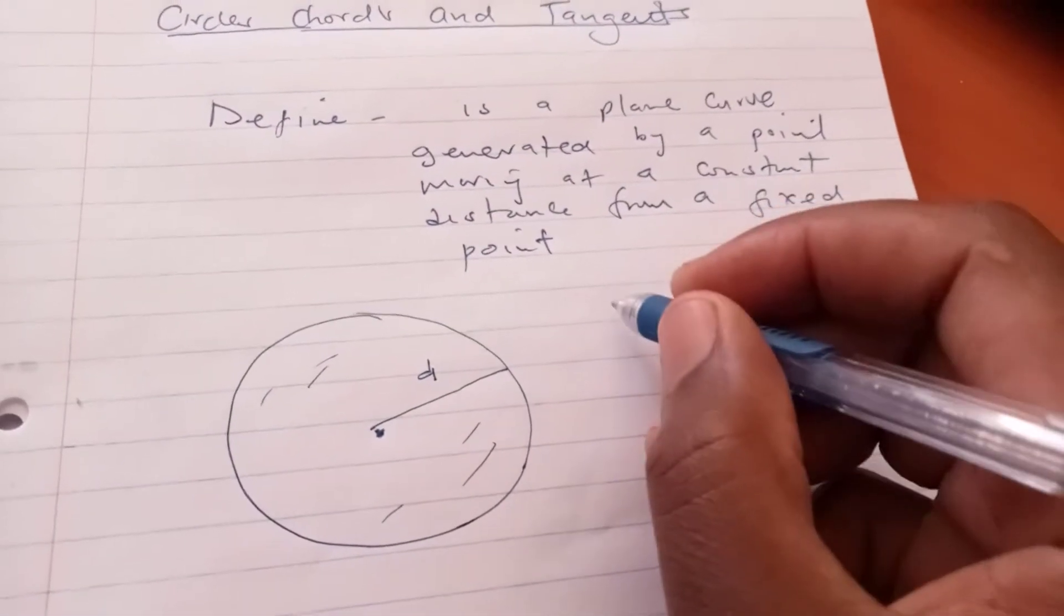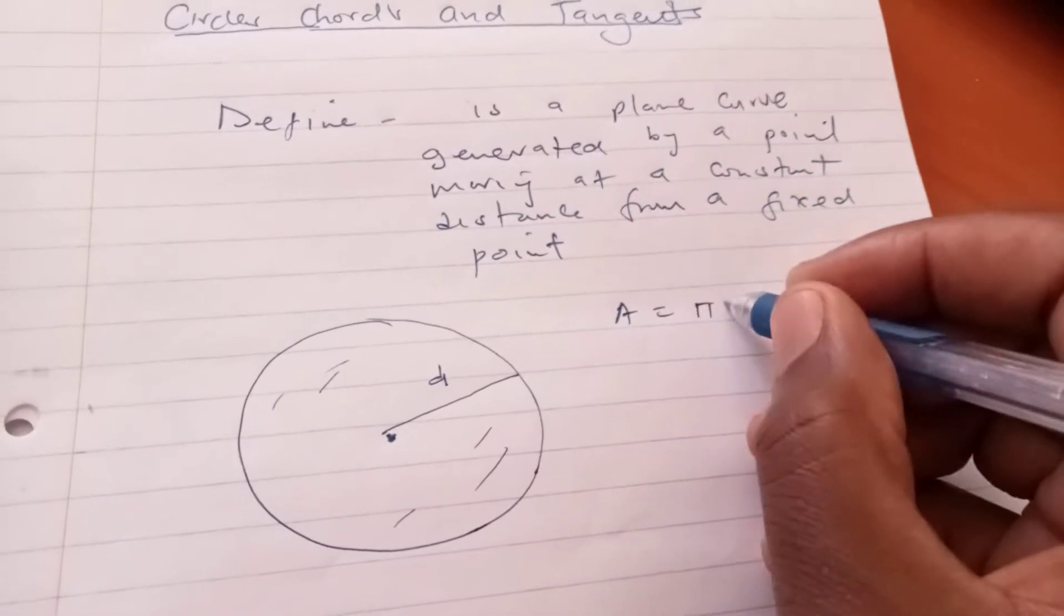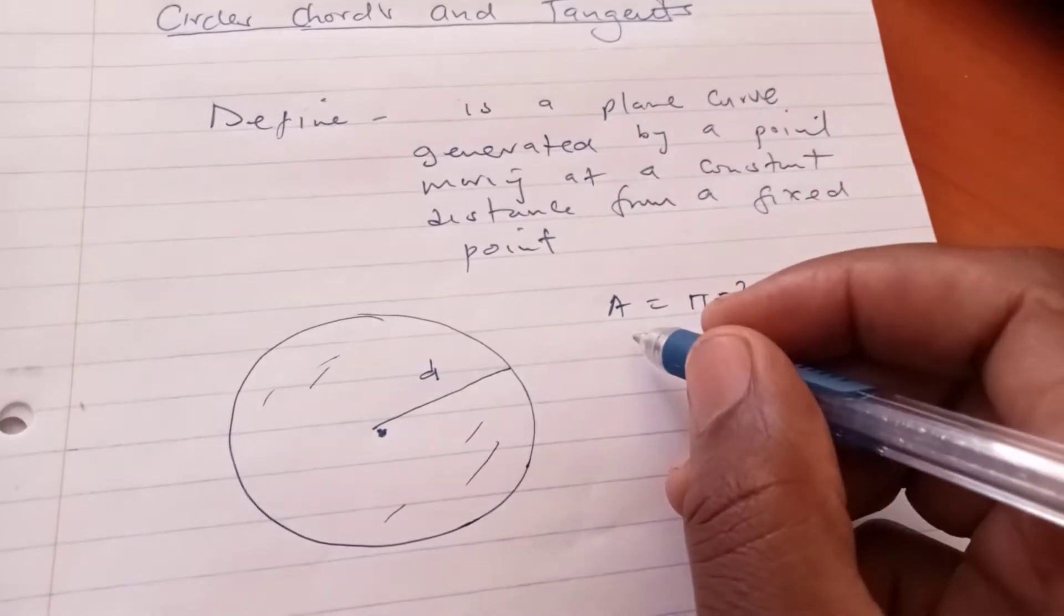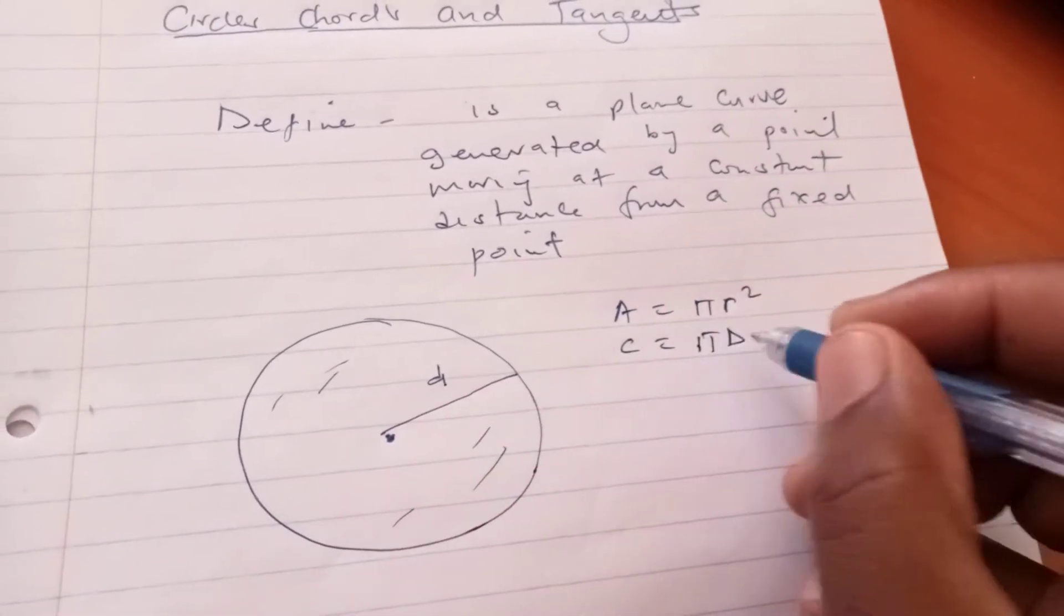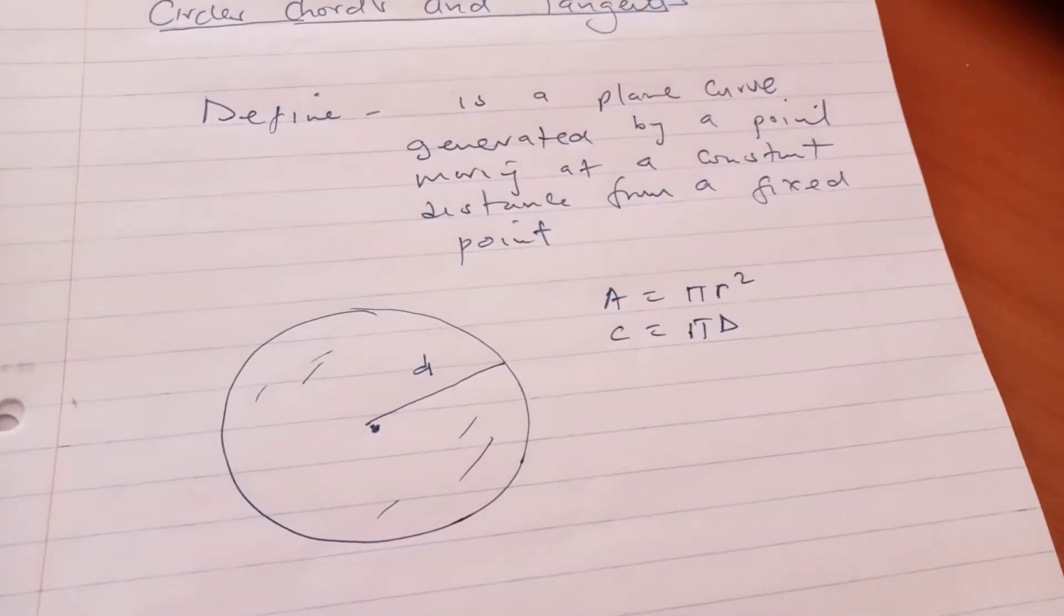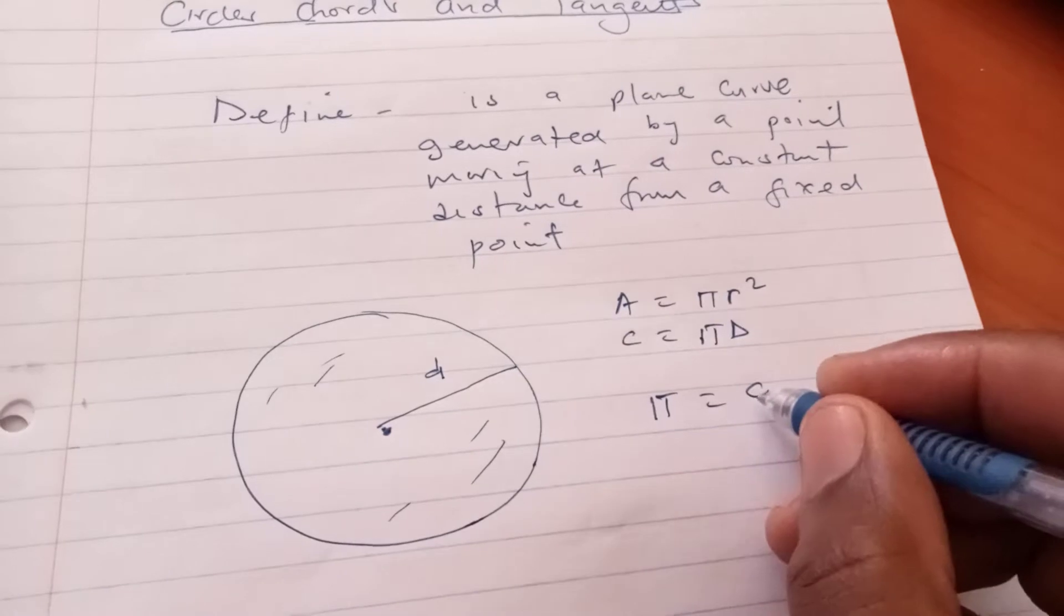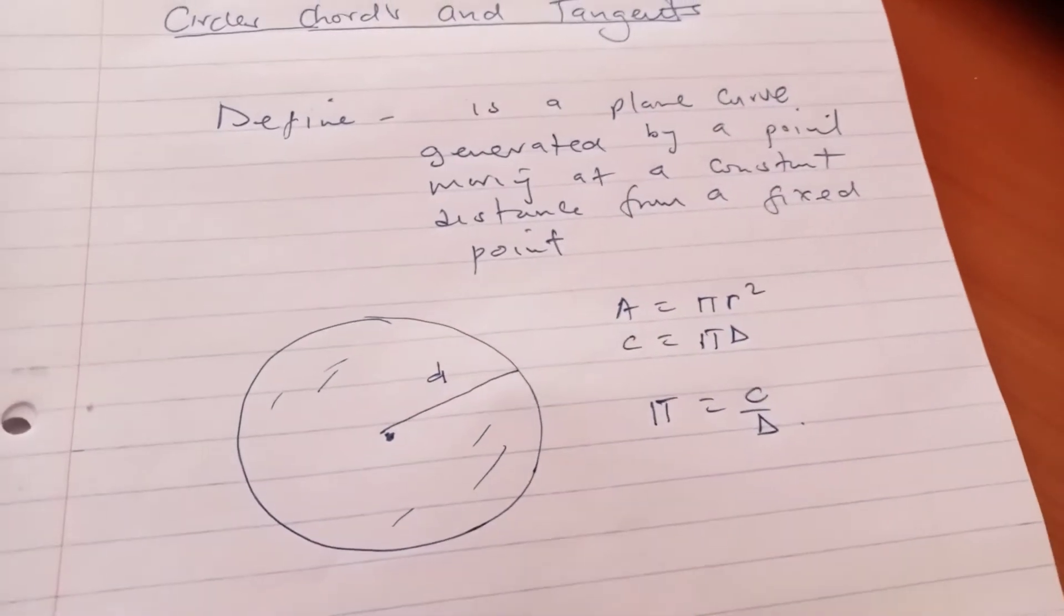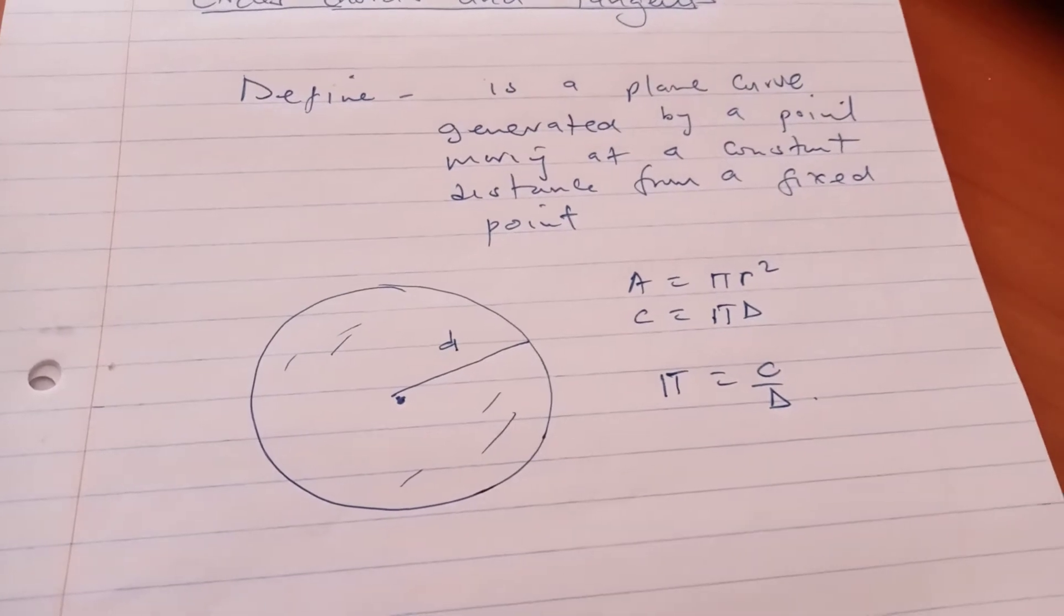More often than not these are some of the areas that we pick in circles. We look at the area of a circle which is given by pi r squared, circumference of that circle given by pi D. And maybe to illustrate, pi is usually the ratio of circumference to its diameter. So that is why it's important you understand such scenarios.